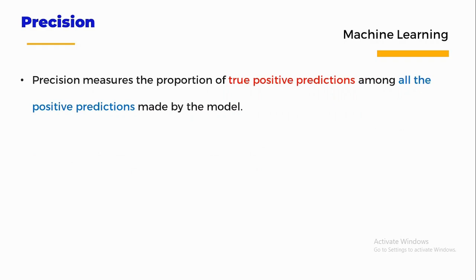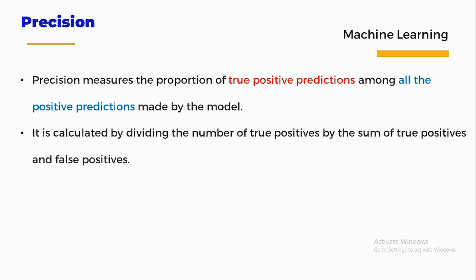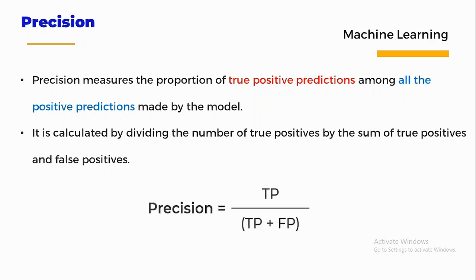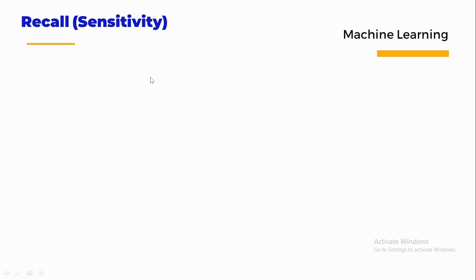Precision measures the proportion of true positive predictions among all positive predictions made by the model. It is calculated by dividing the number of true positives by the sum of true positives and false positives: Precision = TP / (TP + FP). Precision evaluates the accuracy of the positive predictions made by the classifier and is useful in cases where false positives are a higher concern than false negatives.